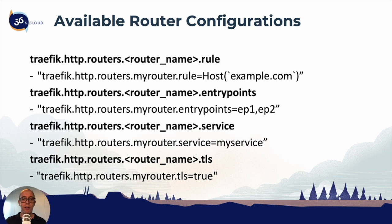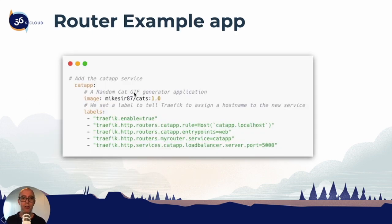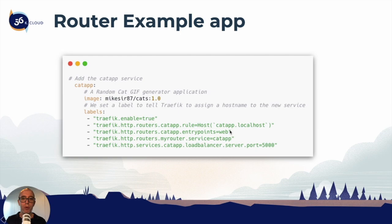We're going to take a look at an example application — our cats application. This is actually a working application. We set traefik.enable equals true. You can see our routers label for the cat app — we assign the host catapp.localhost with back ticks. That allows us to assign a hostname to our service. Next we have the routers catapp entry points set to the web entry point — we only want port 80, not 443. The next line specifies the service, saying we only want to use the catapp service. The final line defines port 5000, which this application requires.